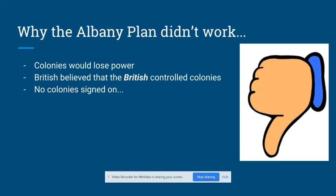However, the Albany Plan does seem to suggest that some powerful people were thinking about what would happen if the colonies started working together, rather than acting as 13 individual players. That idea of unity would have significant implications later on.